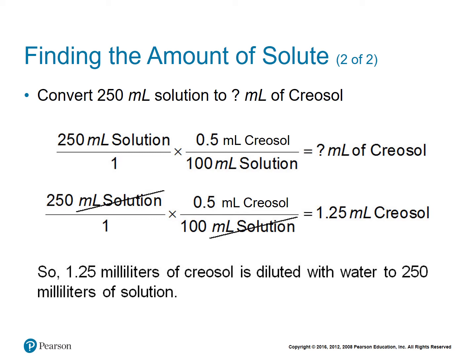We want to convert 250 milliliters of solution to some amount of milliliters of creosol. We take our amount of solution and multiply it by our strength. The milliliters of solution divide out, leaving us with milliliters of creosol. Working with numbers: 250 times 0.5, then divided by 100, gives us 1.25 milliliters of creosol. So 1.25 milliliters of creosol is diluted with water to 250 milliliters of solution.